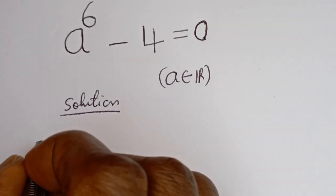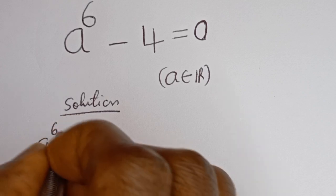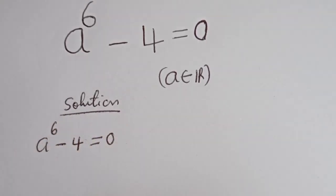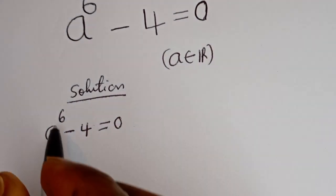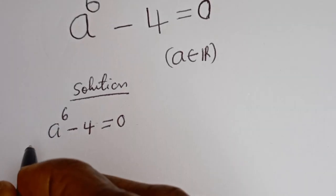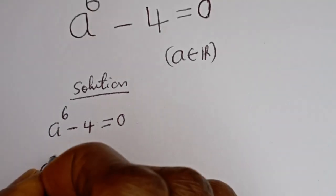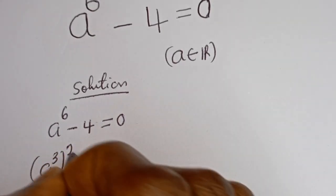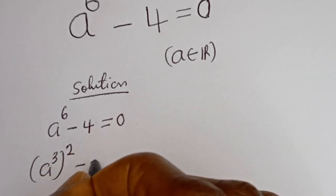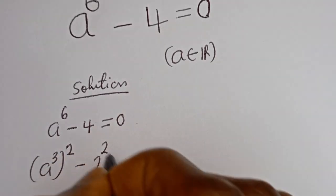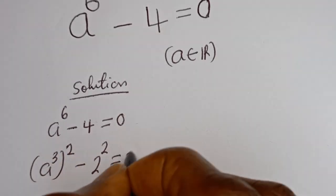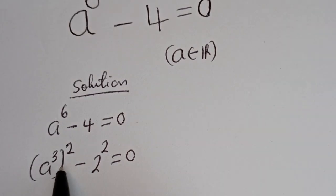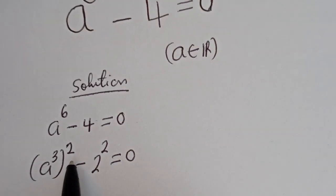We have a to the power of six minus four equal to zero. Now a to the power of six can be written as a to the power of three, squared, and four can be written as two squared, and this is equal to zero. If you look at this, it is in the form of a difference of perfect squares.